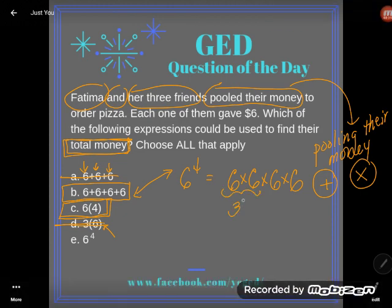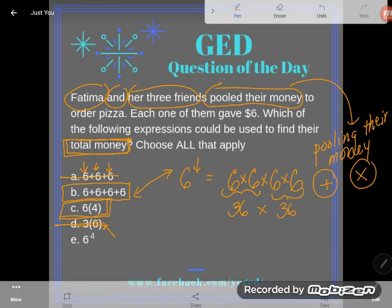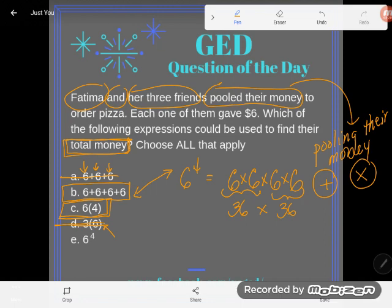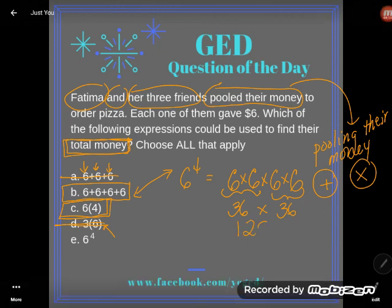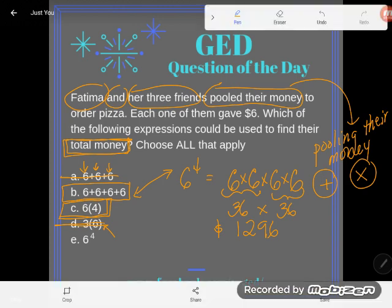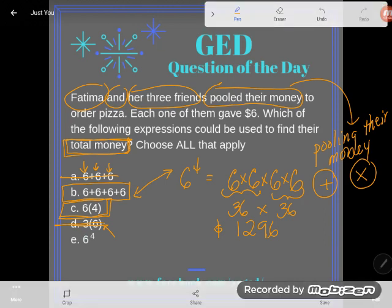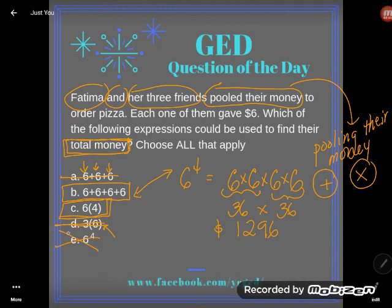What would I get if I did this? Six times six is 36, and this six times six is 36, and $36 times $36 — that's $1,296. I wish life worked this way. If me and my four friends all donated six bucks to the cause, we would suddenly end up with $1,296. But we all live in the real world, and we know that's not how it works. So six to the fourth power was a trick answer.